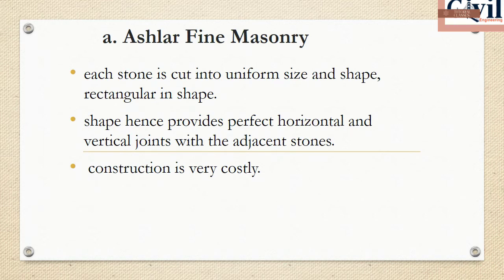The first is Ashlar Fine masonry. This construction method is costly. We use finely dressed stones of uniform size and rectangular shape. The dressing ensures uniform and sharp edges. The joints are horizontal and vertical.